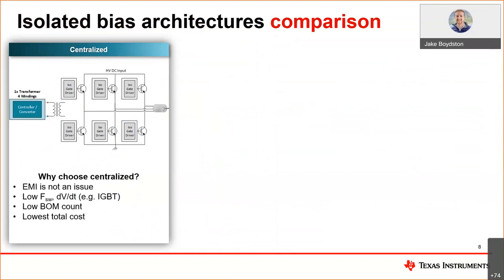The first architecture we could use would be what we call a centralized architecture, typically utilizing one transformer with multiple windings to bias the gate drivers in the inverter stage. Centralized architectures are fairly low BOM count and can be relatively low cost. It may not be optimal if your system is prone to electromagnetic interference, or EMI, has high switching frequency, or high dv/dt.